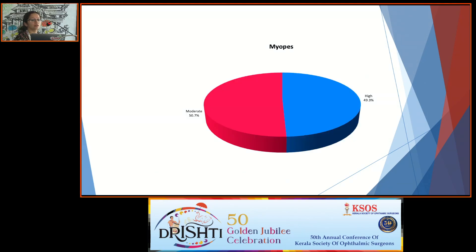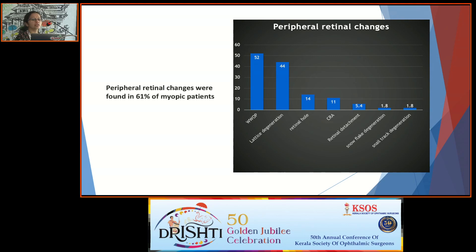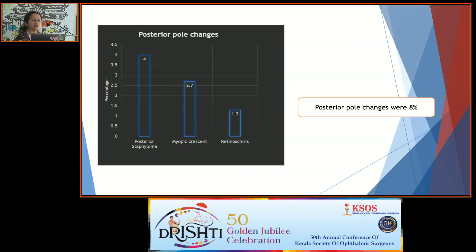We found an equal proportion of moderate and high myopia patients — about 50 percent each. Peripheral retinal changes were found in 61 percent of the myopia patients. The most prevalent finding was white without pressure, and the next most common was lattice degeneration. Posterior pole changes were found in only 8 percent of patients; posterior staphyloma was the most frequent change, followed by myopic retinoschisis.